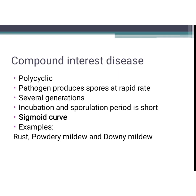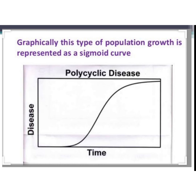Compound interest disease is mathematically analogous to compound interest in money and is a polycyclic disease. It is caused by a polycyclic pathogen with a high birth rate — the pathogen produces spores at a rapid rate. These diseases have several generations; incubation and sporulation period is short. The curve is a sigmoid curve — don't confuse it. Examples are rust, powdery mildew, and downy mildew. You can see the sigmoid curve of polycyclic disease in the picture.